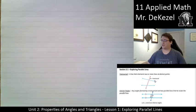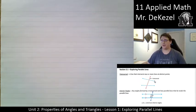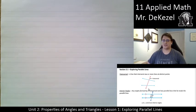First is a transversal. In this diagram the transversal is this red line, and it is a line that crosses two or more other lines at any point. These blue lines are moving along here, and this red line — the transversal — crosses them. That is the definition of a transversal: this red line here.